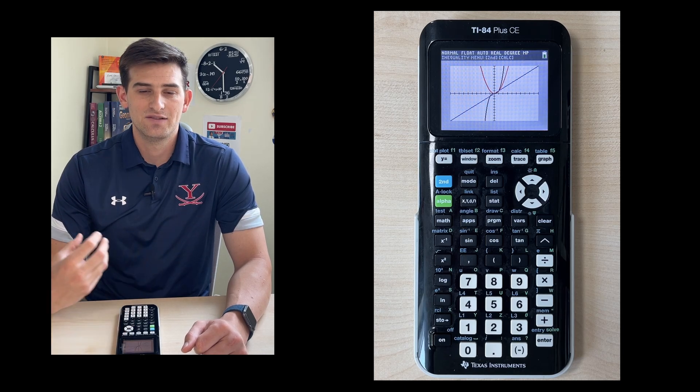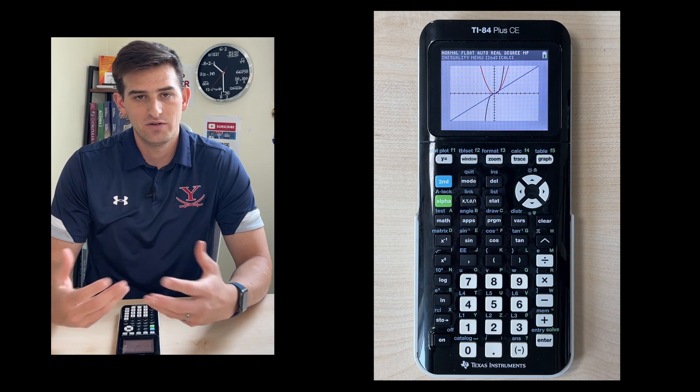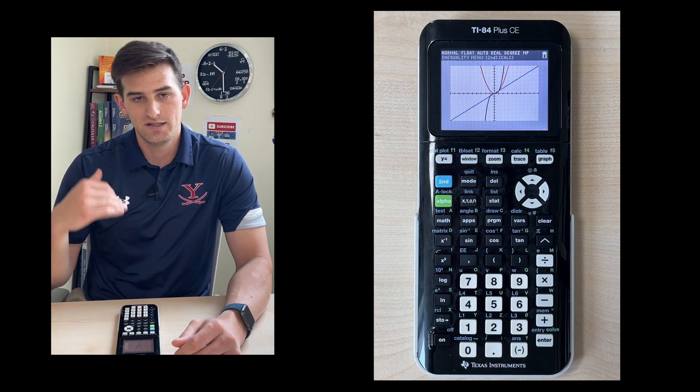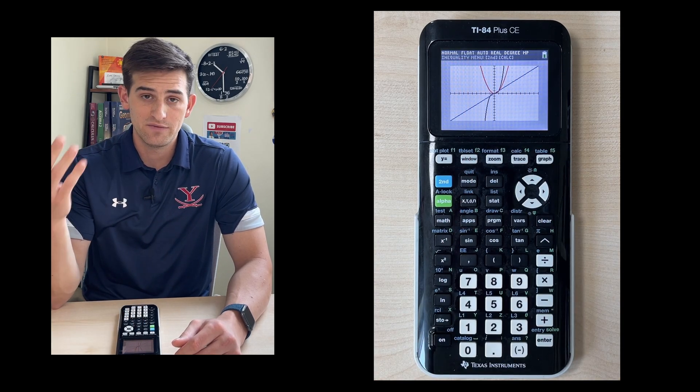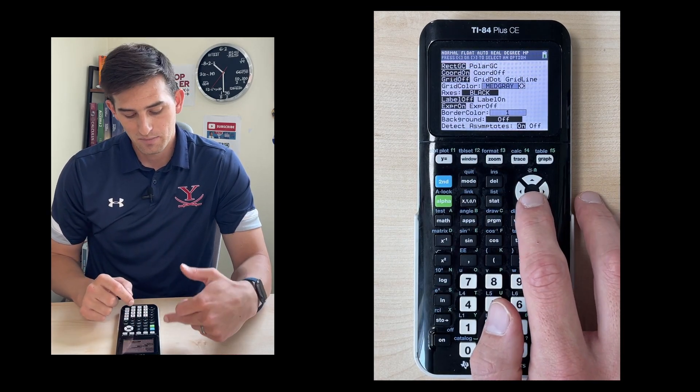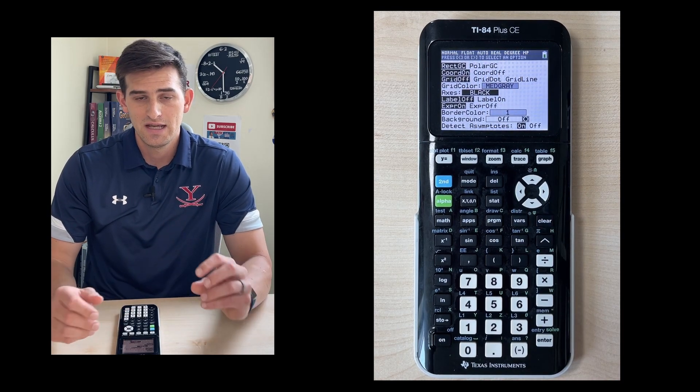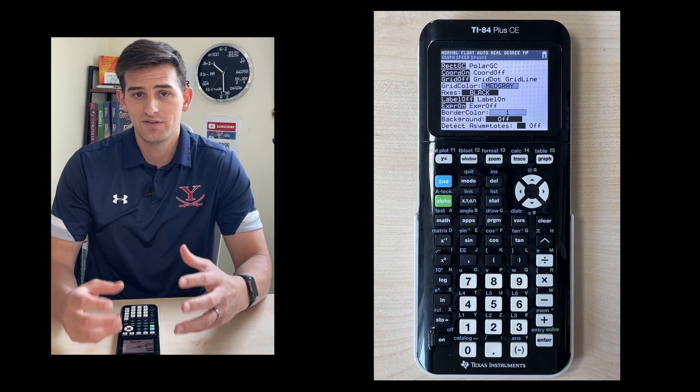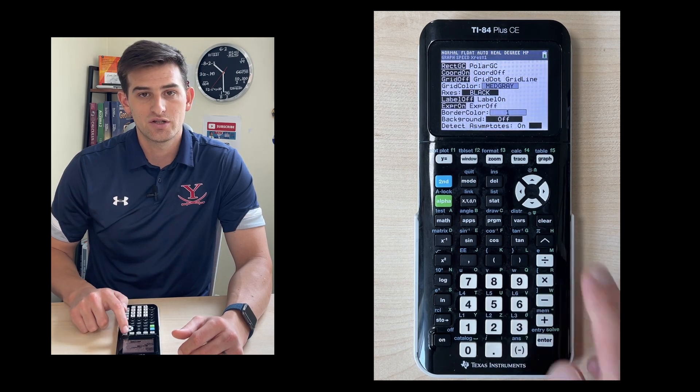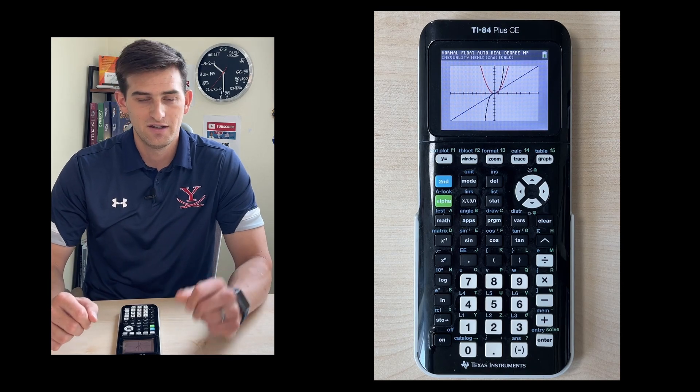The second thing is we can turn off detecting asymptotes. Obviously these three functions do not have an asymptote, so it's okay. To do that, we need to adjust the format. Format is using the zoom button, but it's in blue above zoom, so we have to do second zoom. Notice at the bottom of the screen my calculator is detecting asymptotes. What that means is as my calculator is trying to graph the function, it's examining the entire calculator screen to see if there is an asymptote. If we go down to the bottom and turn that off, now watch how fast this will graph. We go to graph and it's so much faster. Now all three functions are there right away.